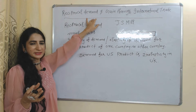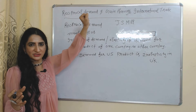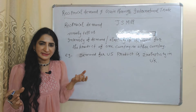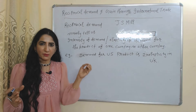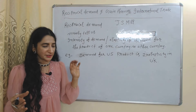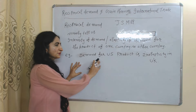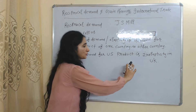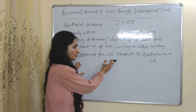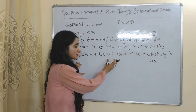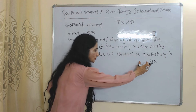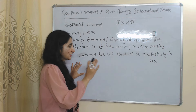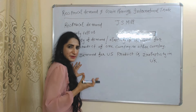Now we'll see J.S. Mill's views about gain from international trade — reciprocal demand and gain through international trade. Reciprocal demand mainly tells us the intensity, or the elasticity, of demand for one country's product in another country. For example, if demand for USA's product is inelastic in UK, that means UK cannot reduce or change the demand for USA's product because USA products are very important in UK. No matter how much price USA is increasing, in such a case USA will get benefited.